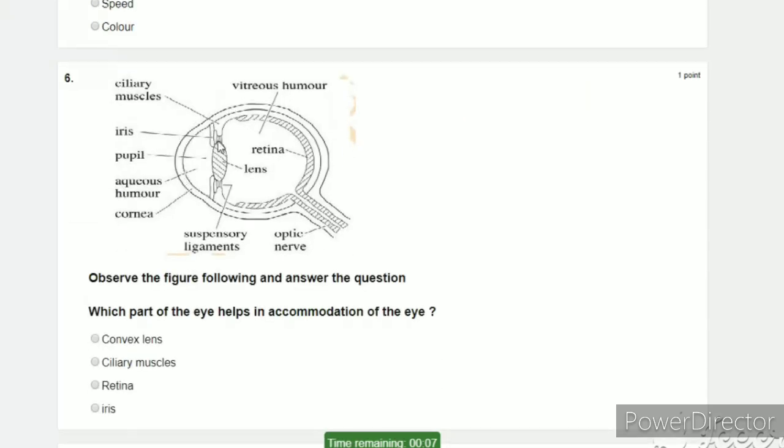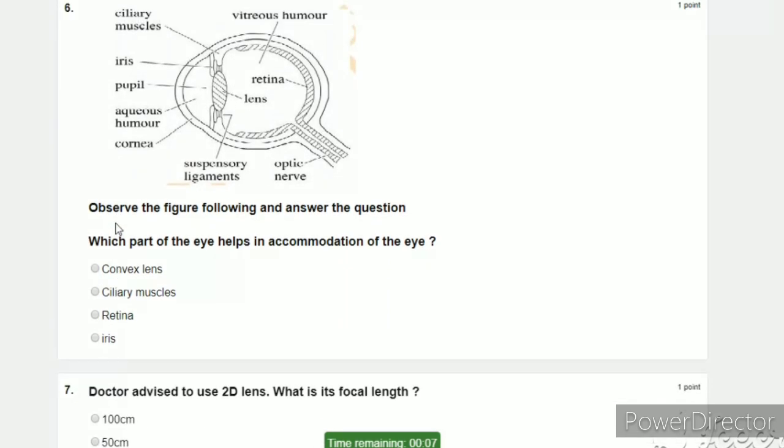Next question. Here we have the eye diagram. Which part of the eye helps in accommodation of the eye? This accommodation means focusing on near and far objects without trouble. The accommodation is done by the ciliary muscles. Here the answer is ciliary muscles.